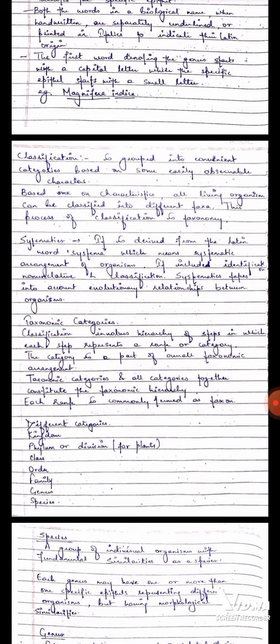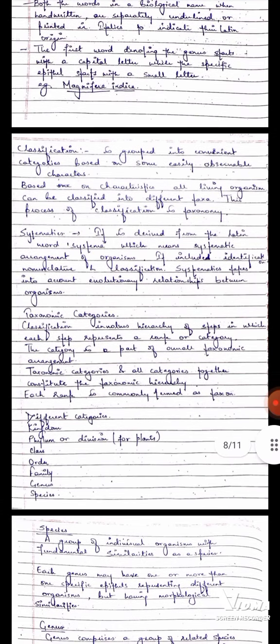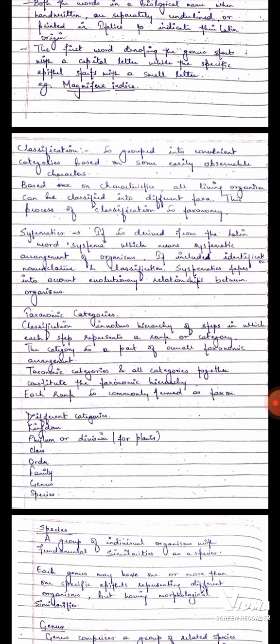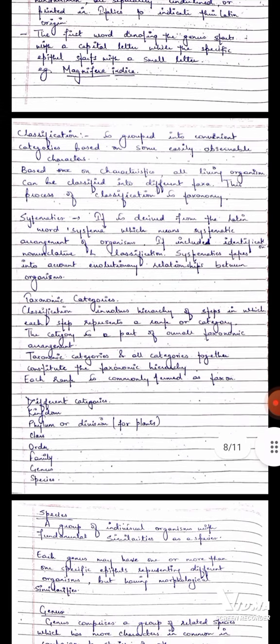The next topic is Taxonomic categories. Classification involves hierarchy of steps in which each step represents a rank or category. The category is a part of overall taxonomic arrangement. Taxonomic categories and all categories together constitute the taxonomic hierarchy. Each rank is commonly termed as taxon. You can see it starts with kingdom and ends with species.